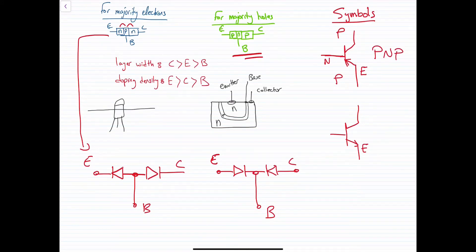Here, on the emitter side, the arrow is pointing toward the emitter. So the negative is here — the positive is on the base and the negative is on the emitter side.